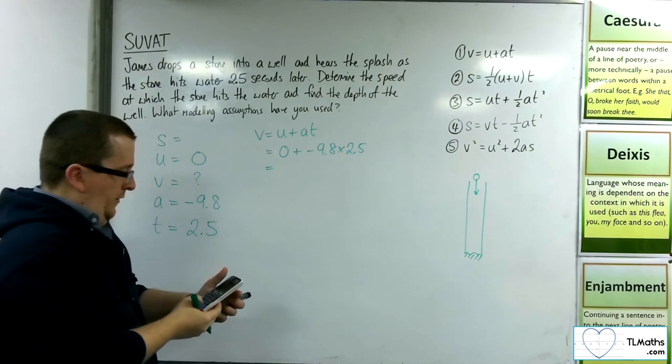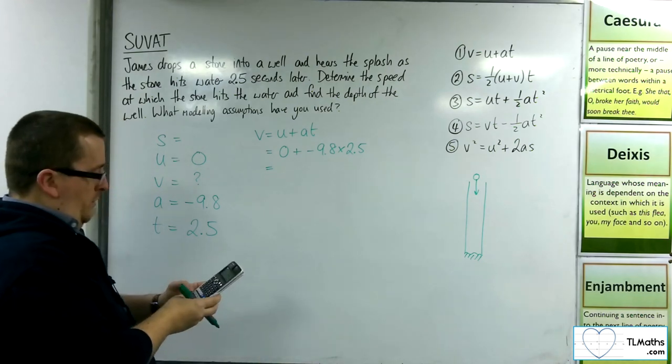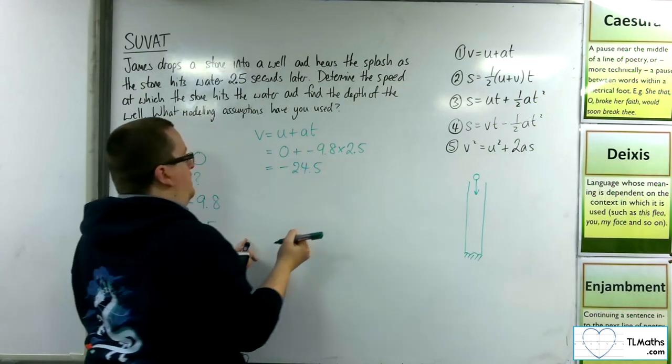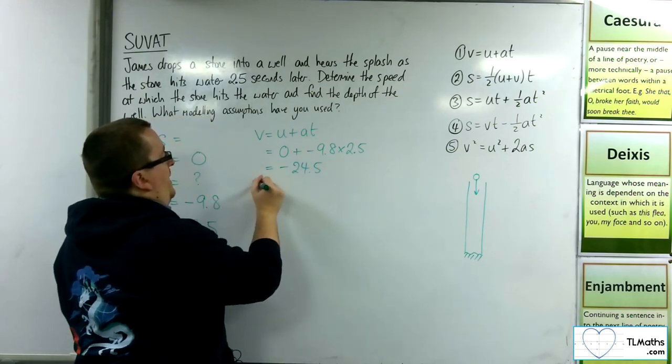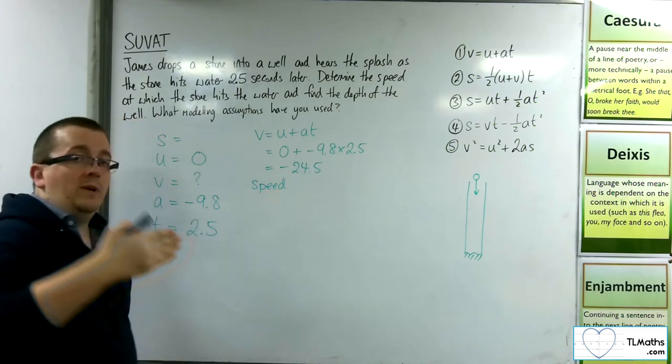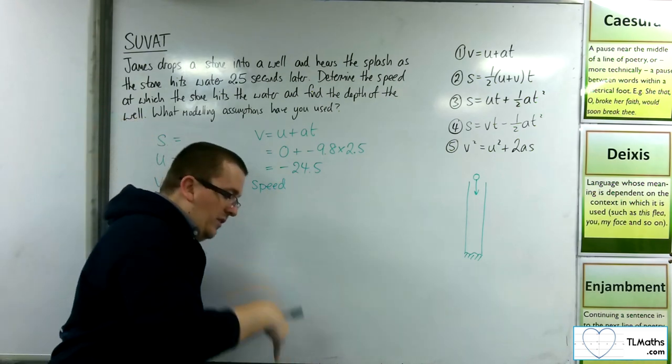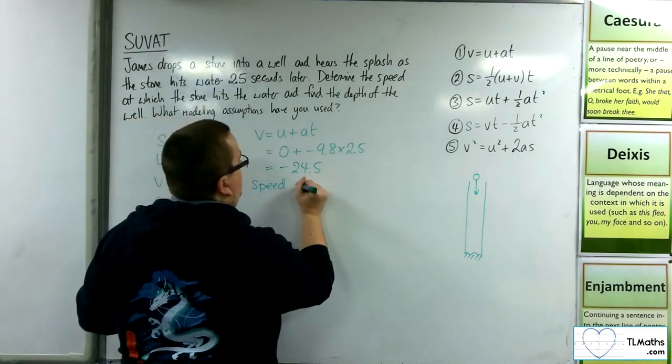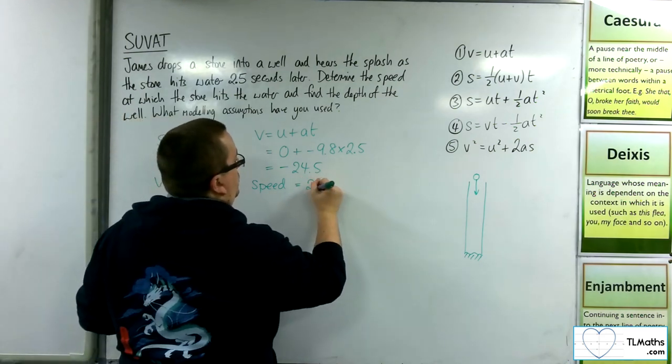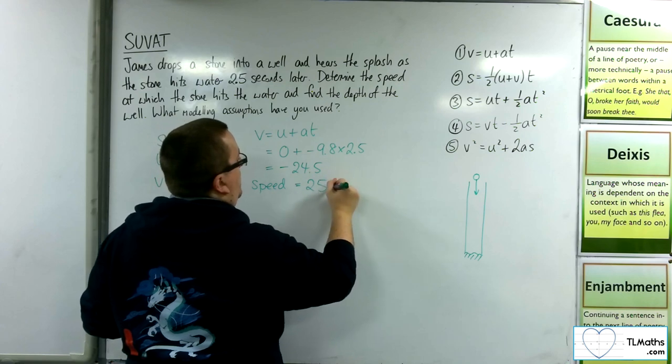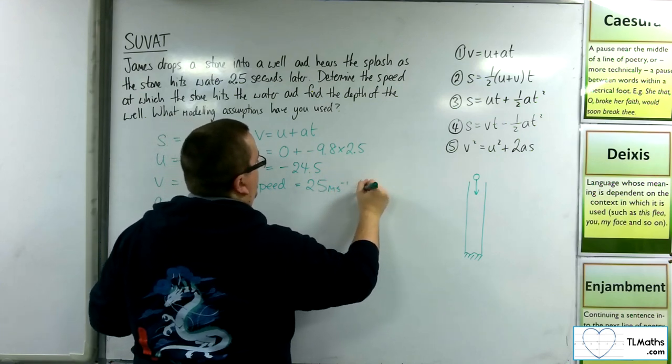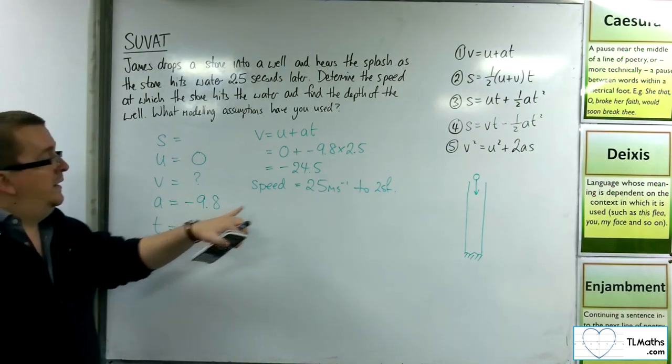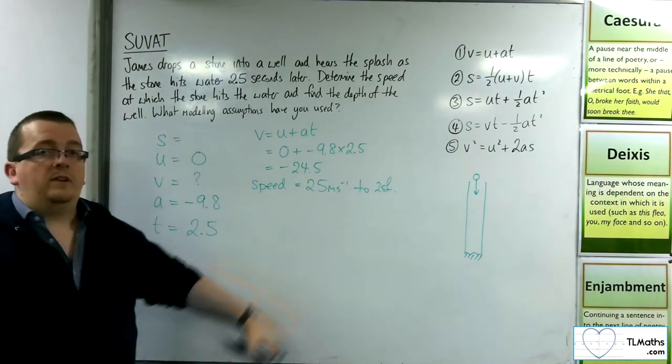So we have minus 9.8 times 2.5, which is minus 24.5. So the speed, because that's taking the direction into account, it's hitting the water going that way, vertically downwards at 24.5 metres per second. The speed is equal to 24.5 or 25 metres per second to two significant figures. Because we're using gravity at two significant figures, our result must be to two significant figures as well.